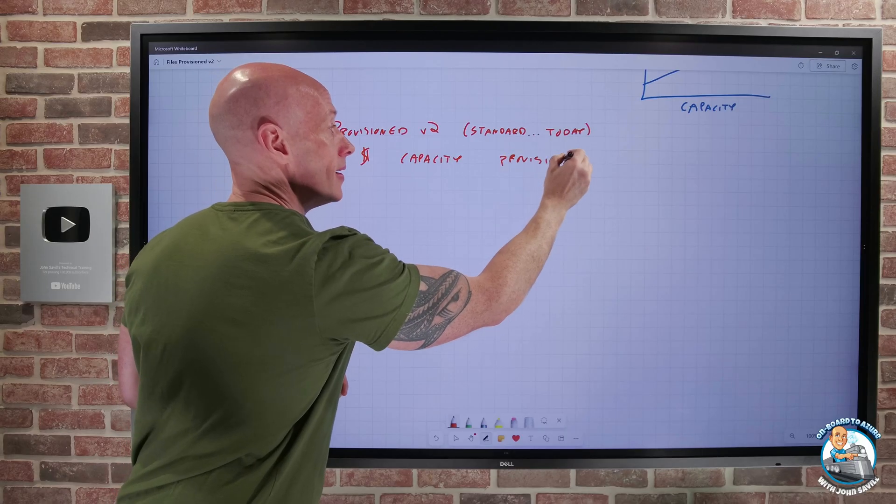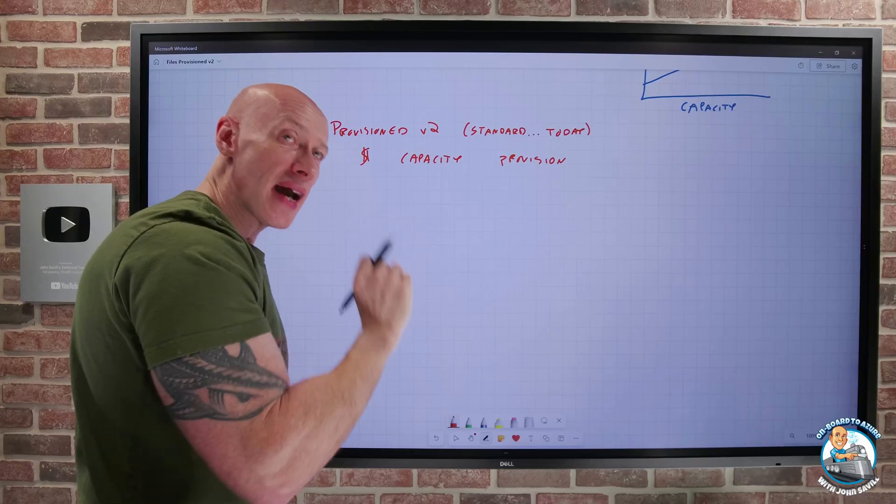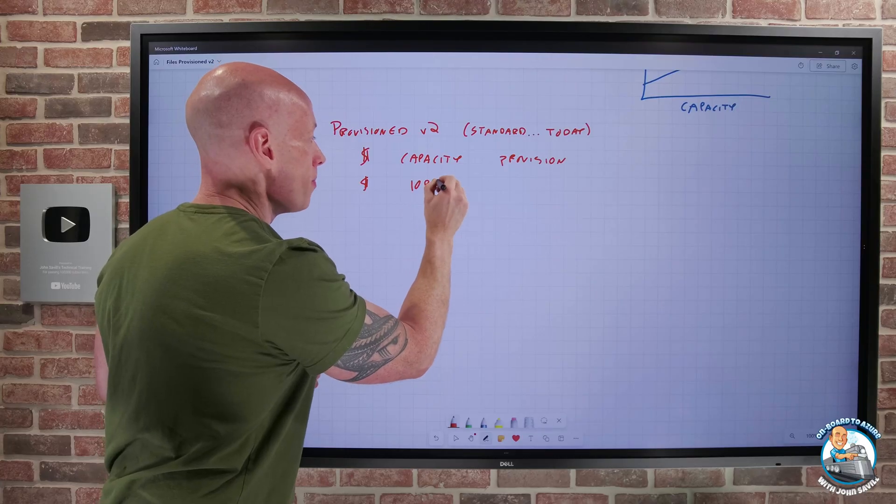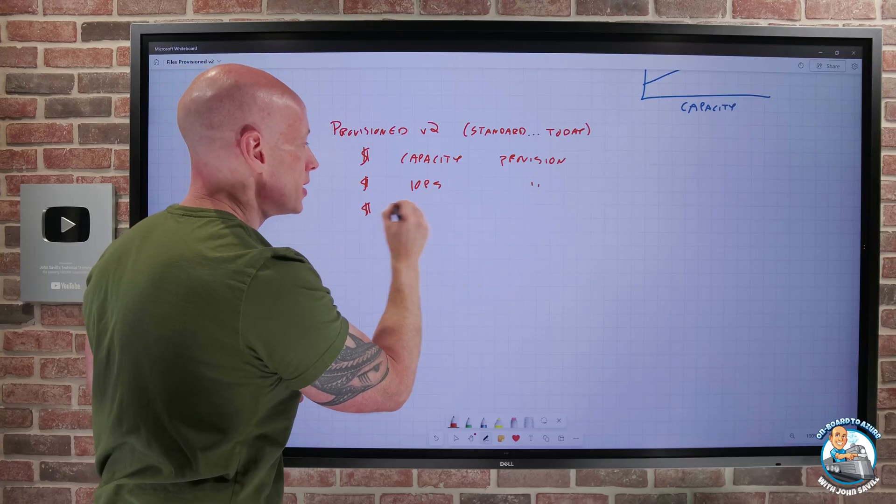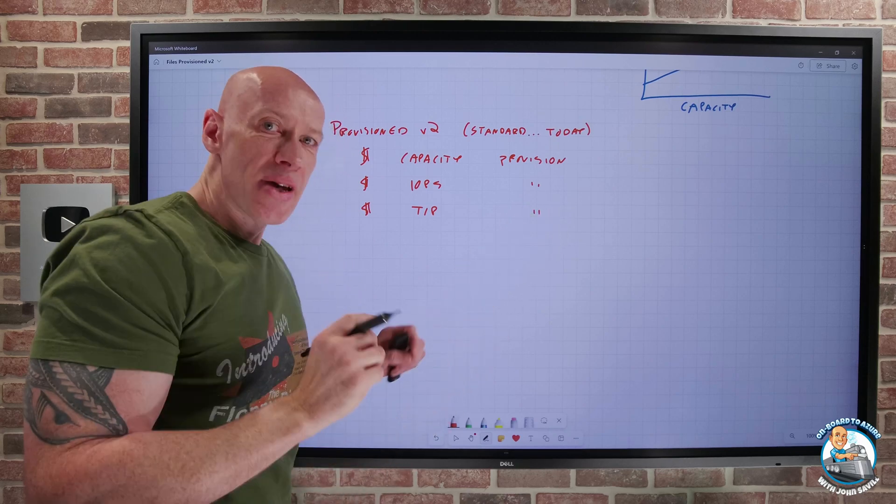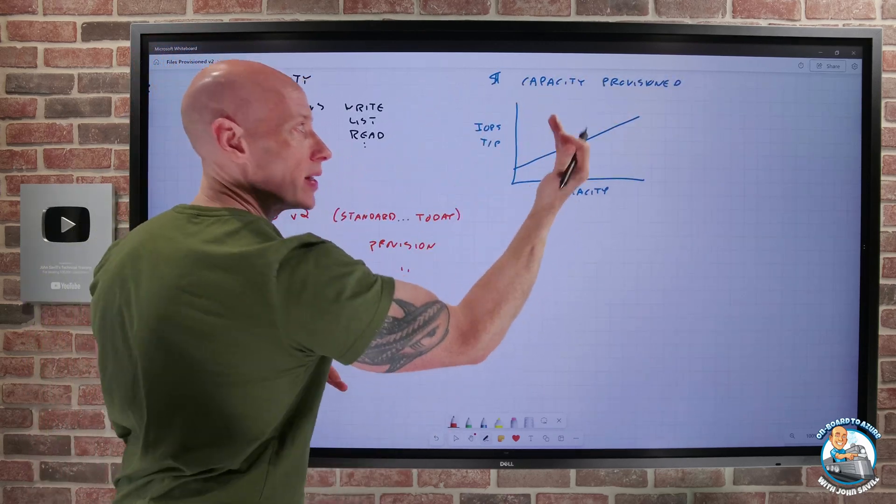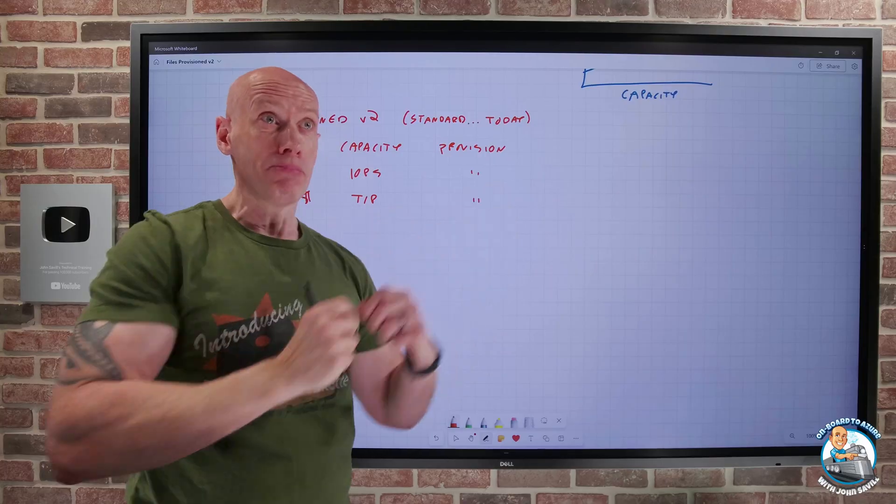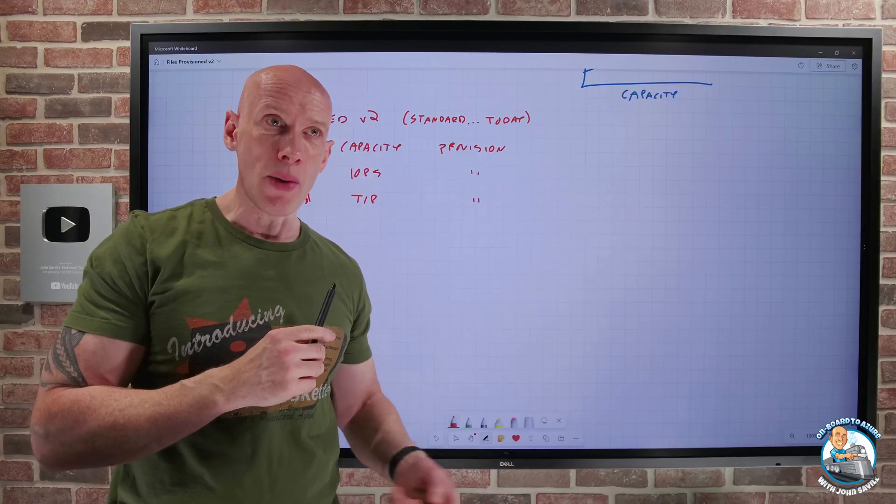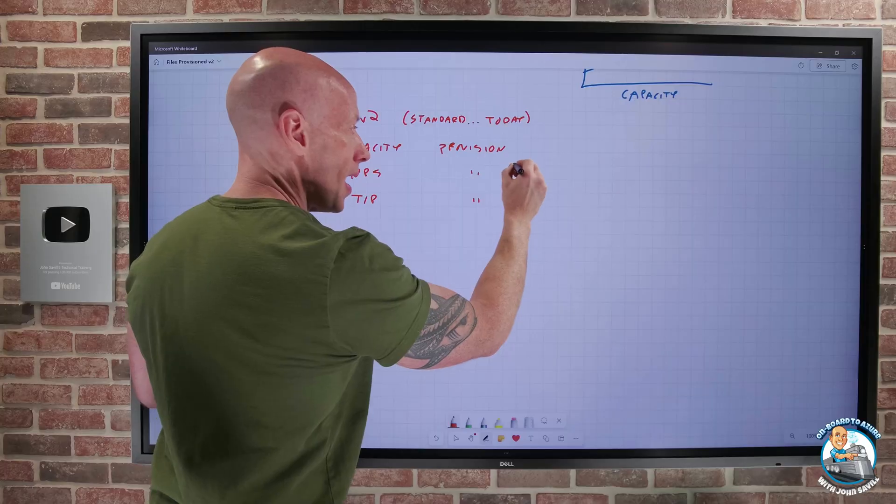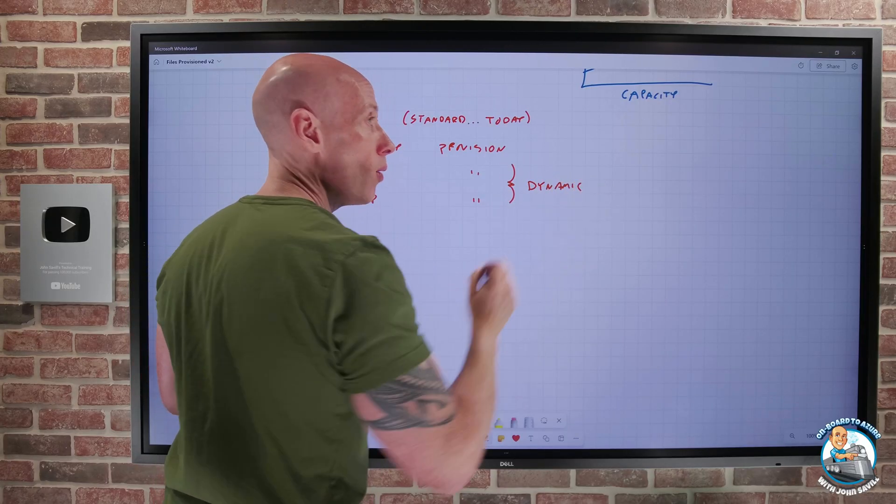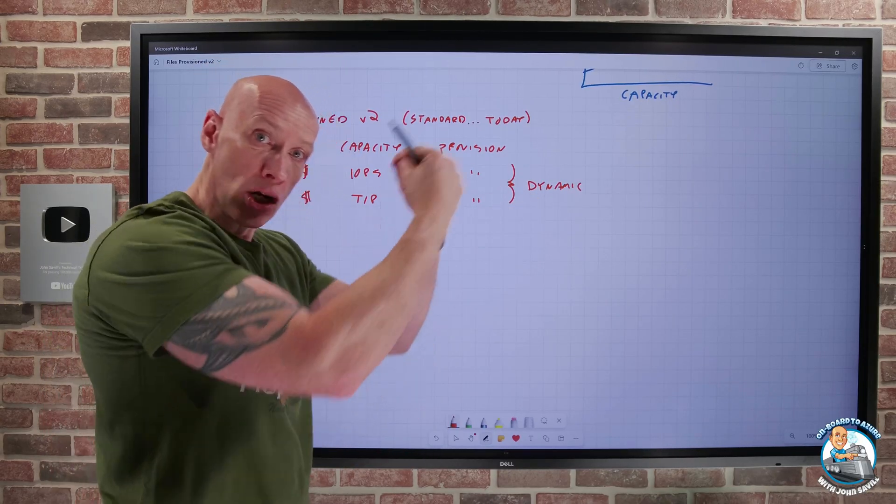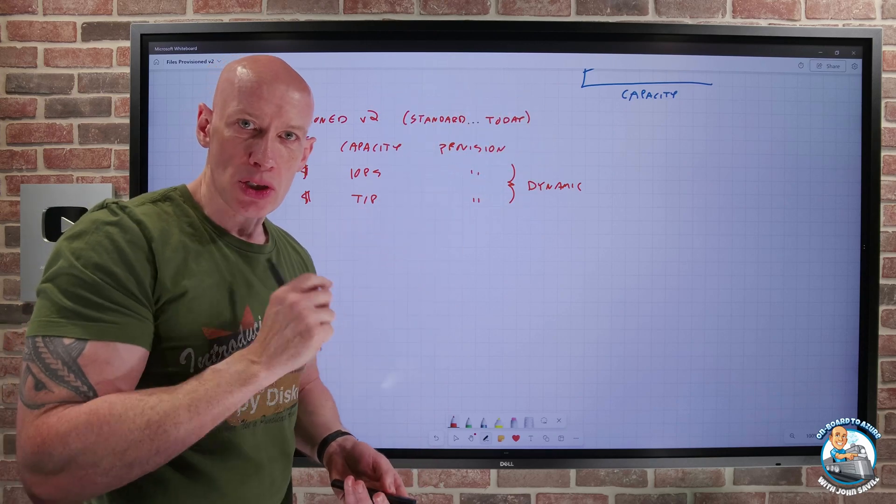And what you might guess is what this is going to do is now I get independent dials for the capacity I provision. So that's a big difference here. I tell it the amount of capacity I want to be available. I pay for that provision capacity, not the amount I'm using. I'm also paying for the provisioned amount of IOPS and the provisioned amount of throughput. But these are independent dials. There is not a direct correlation between the capacity and the IOPS and the throughput. I individually, when I go and create one of these shares, I say the capacity I want, the IOPS I want, and the throughput I want. Now, these are dynamic. I can just go and change these whenever I want. But if I increase those numbers, I have to wait at least 24 hours after I increase to be able to scale it back down again. So just a key point about that.